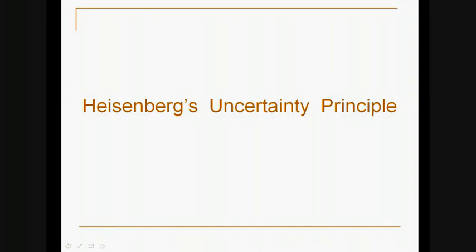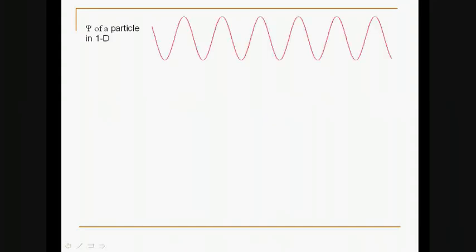Heisenberg's Uncertainty Principle. Probably most of us will remember from various science classes that every particle has a wave associated with it. So for a particle in one-dimensional space, for example,